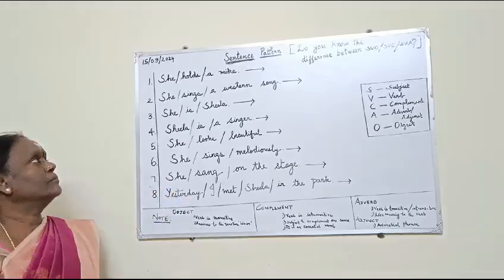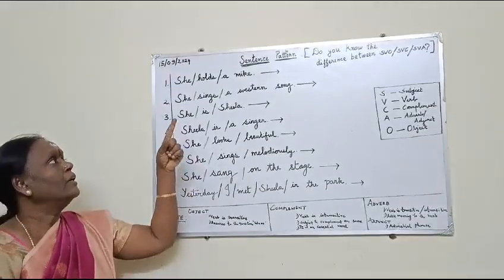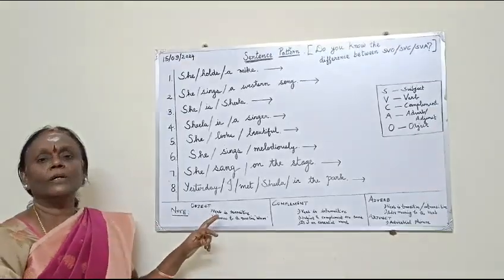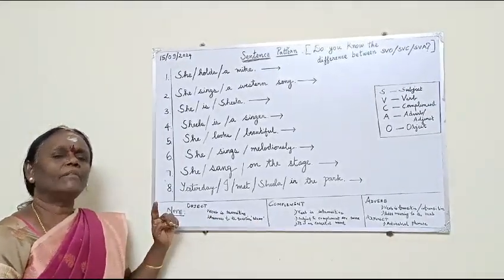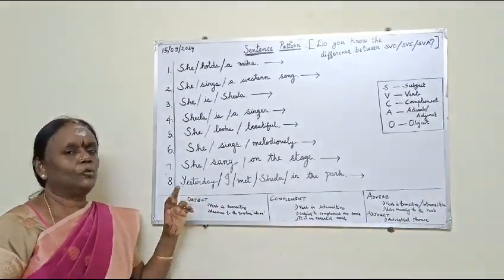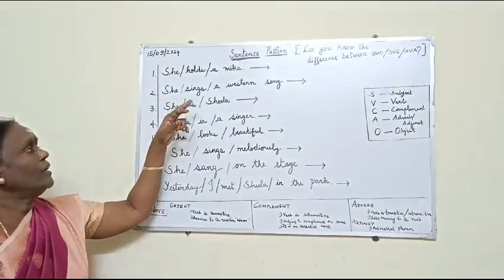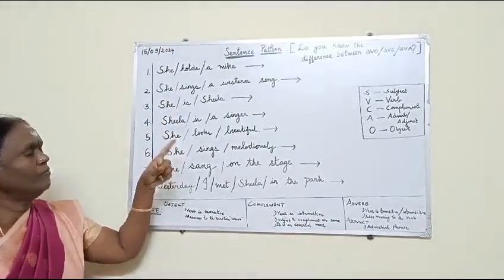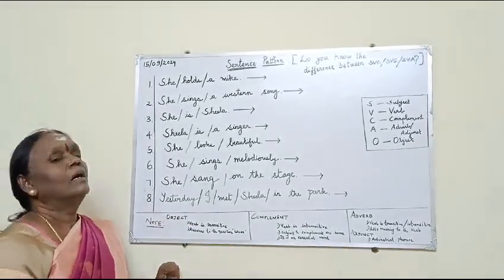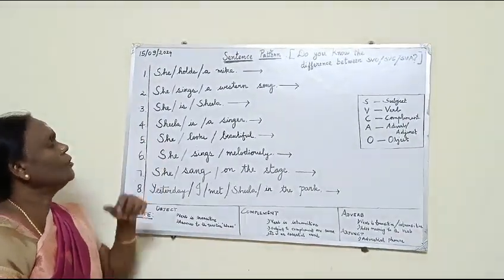She holds a mic. She is the subject, holds is the verb, and a mic is the object. Why do I say it is an object? Because the verb is transitive. I have given you a separate video about transitive and intransitive verbs. A transitive verb will surely take an object and we are able to change active to passive voice — a mic is held by her.